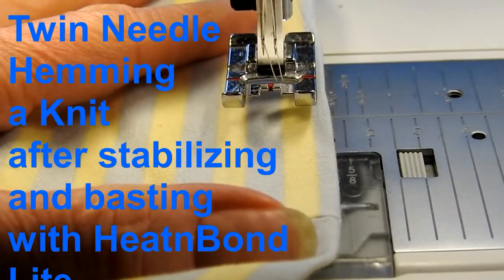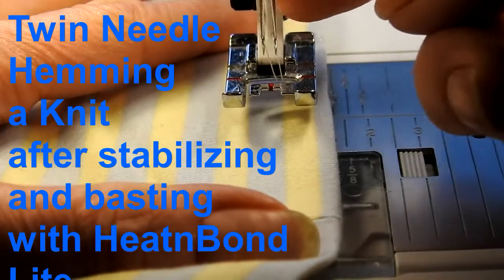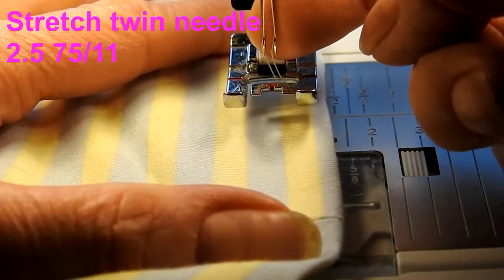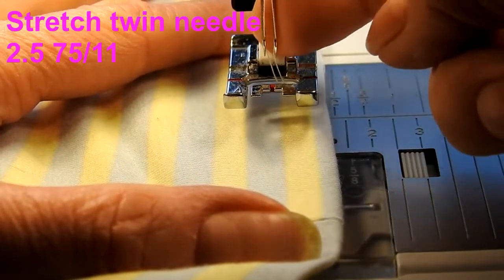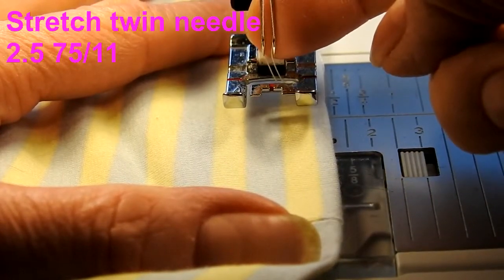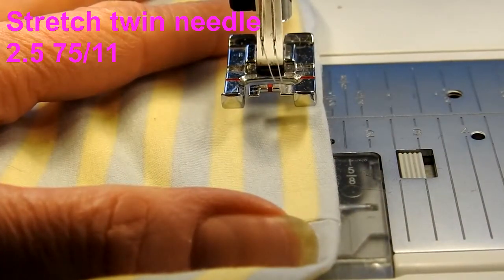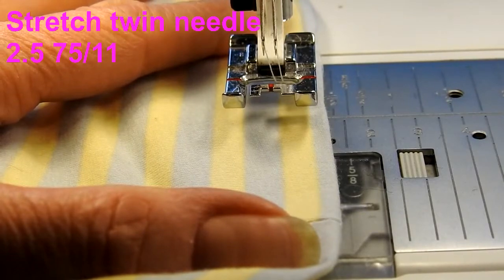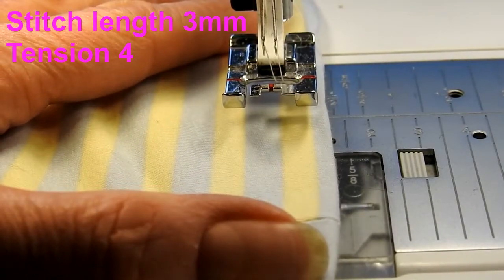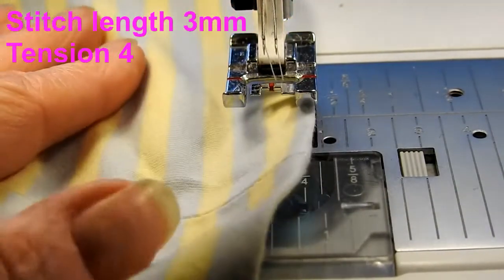I've got my sewing machine threaded up with a twin needle. It's a 2.5 millimeter distance apart and it's a 75-11. I've lengthened my stitch from 2.5 to 3 and I've reduced my tension from 4.6 down to 4.